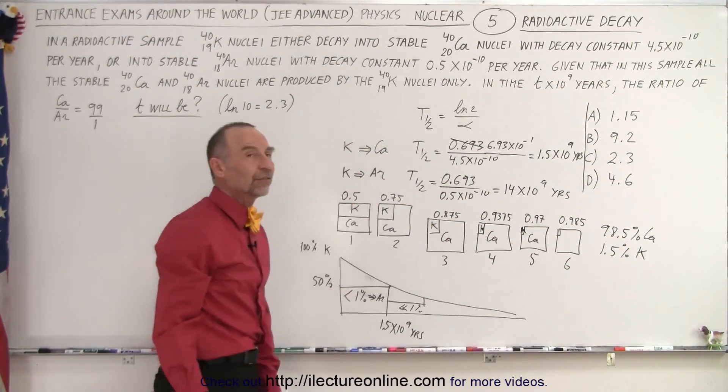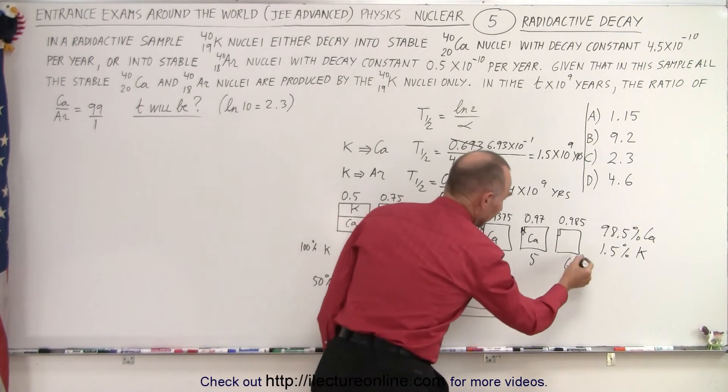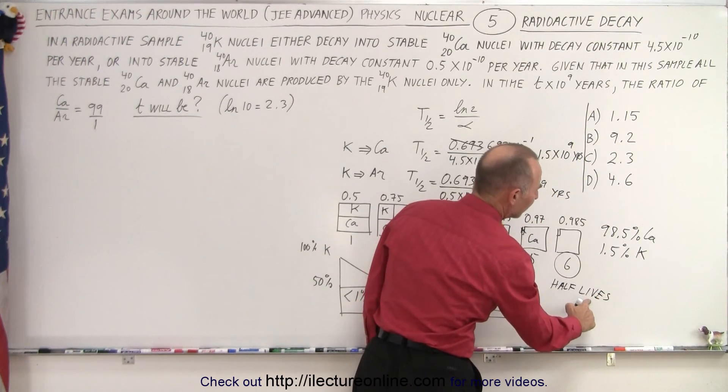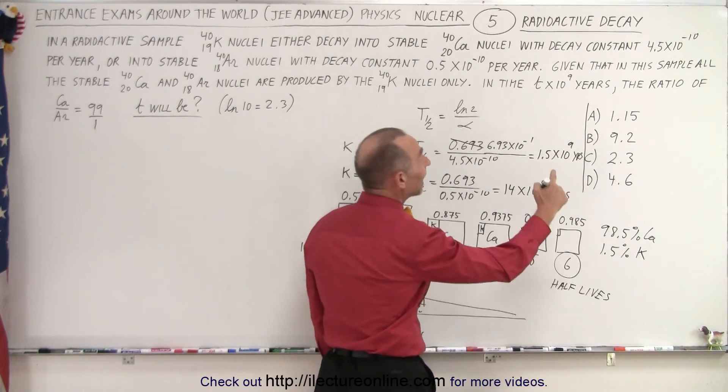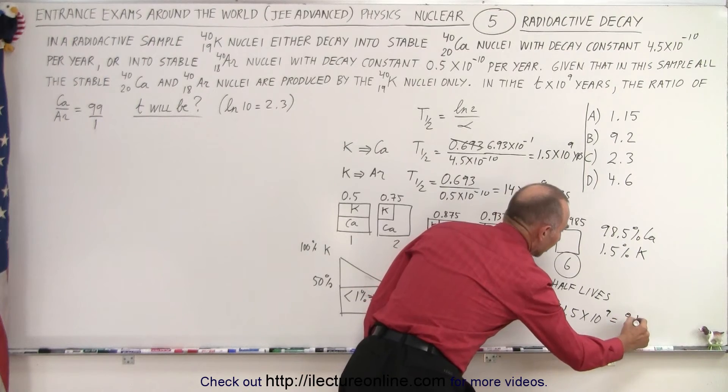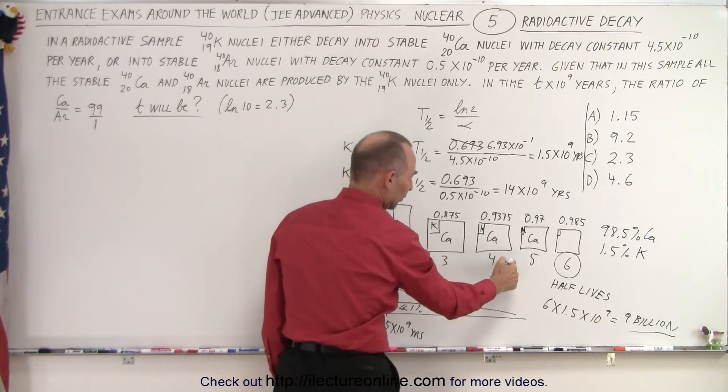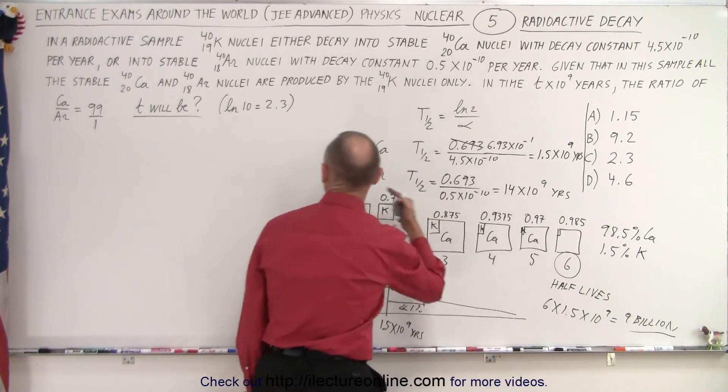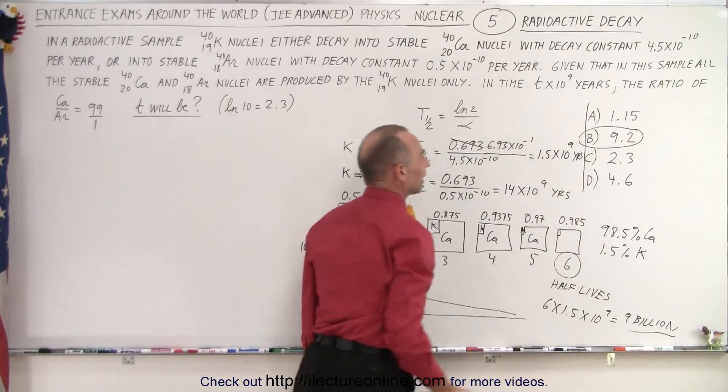And almost 99% of it would have gone into calcium. And there we have kind of the 99 to 1 ratio. And that would happen after six half-lives. So we're looking at six half-lives. And six times 1.5 times 10 to the ninth is 9 billion years. And the only answer that's close to that is answer B. There's no way this could have happened after 4.6 because at that point you have not nearly enough calcium in order to have a 99 to 1 ratio to argon. So I'd say the answer would be B. I would say B without a calculator, that's the best I could come up with.